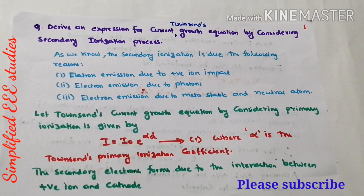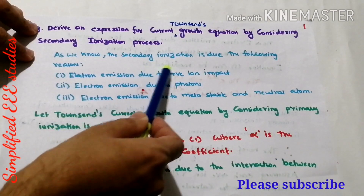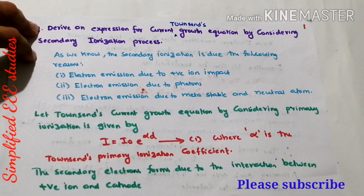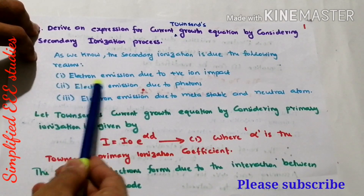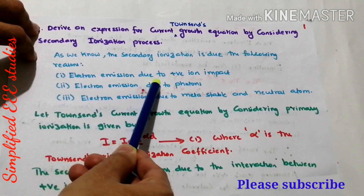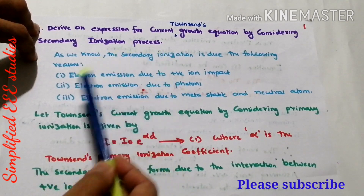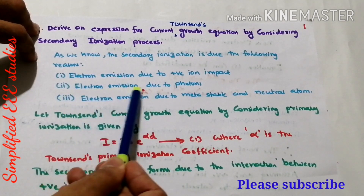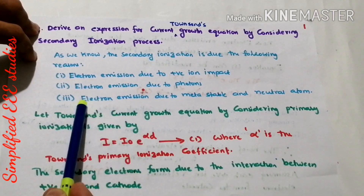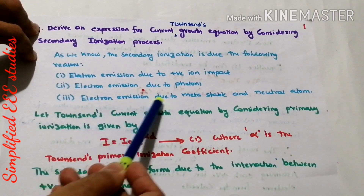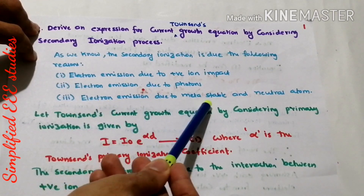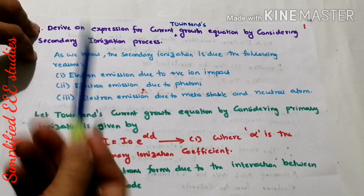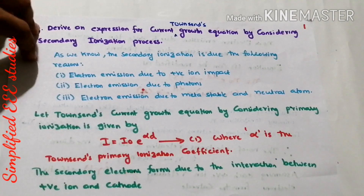As we know, the secondary ionization is due to the following reasons. The first one is electron emission due to positive ion impact. The second reason is electron emission due to photons. The third one is electron emission due to metastable and neutral atoms — this third one will be minute and might be negligible.